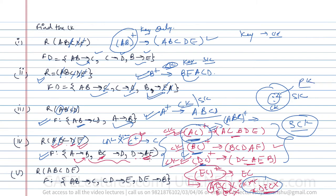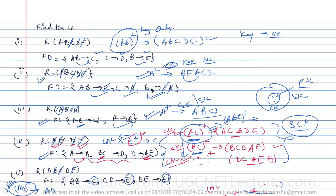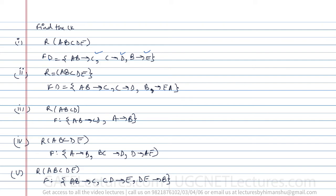Now question five: R(A,B,C,D,E) with AB→C, CD→E, DE→B. On the right-hand side we have C, E, and B — so A and D are not present. Taking the AD closure: with A I identify A only, and with D I identify D only — AD cannot identify everything. So AD is not a candidate key, and we must add other attributes to make it a key.